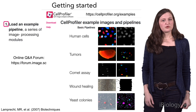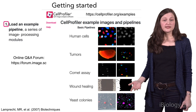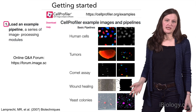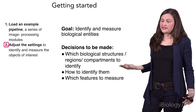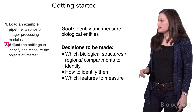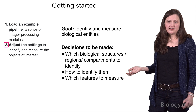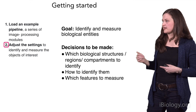The best place to start with CellProfiler is to find an example pipeline, either from a paper where CellProfiler was used, from the online question-and-answer forum forum.image.sc, or from CellProfiler's example page. Once you've loaded a pipeline, you can start adjusting it to customize it to your biological problem. The main goal is to identify and measure biological entities — whether cells, colonies, synapses, and so on. The decisions to be made are which structures or compartments to identify, how to identify them, and which features to measure.